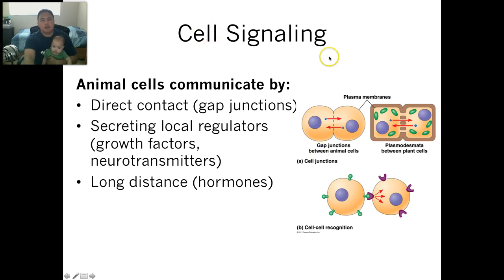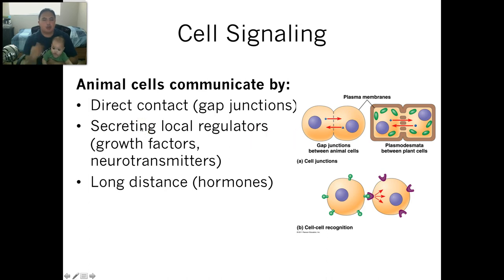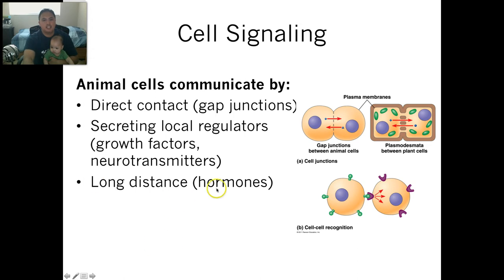We talked at the beginning of the year about how cells talk to each other. They can do direct contact at gap junctions — here are an animal cell and a plant cell, and you can see how cells talk to each other just because they're neighbors. They can also secrete stuff locally. We talked about neurotransmitters with neurons. And then there's also long distance signaling, like hormones, which interact with the rest of your body over long distances.